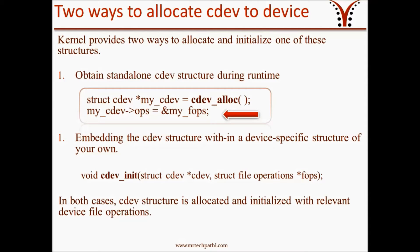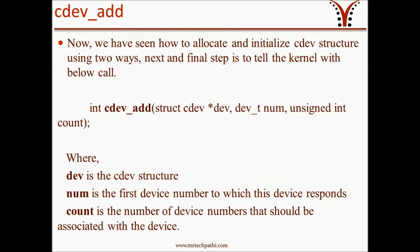The second way to allocate a cdev structure is by embedding the cdev structure within a device-specific structure of your own. This is a bit simpler — you just need to call cdev_init with two input arguments: one is a pointer to the cdev structure, and the other is a pointer to your device file operations. In both cases, the cdev structure is allocated and initialized with the relevant device file operations.